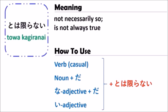So next, let's go to see some examples to better understand how to use the grammar of とは限らない.